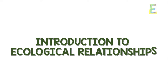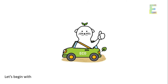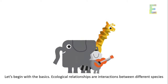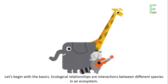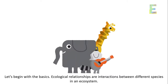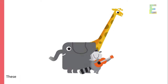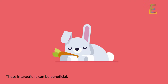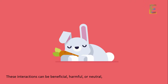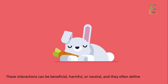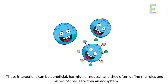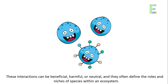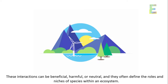Introduction to Ecological Relationships — let's begin with the basics. Ecological relationships are interactions between different species in an ecosystem. These interactions can be beneficial, harmful, or neutral, and they often define the roles and niches of species within an ecosystem.